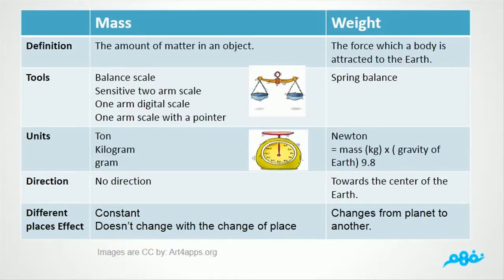Number 5 different places effect. Mass of objects is stable and does not change from a place to another. Weight changes from planet to another.